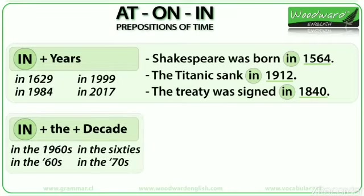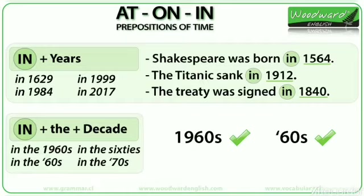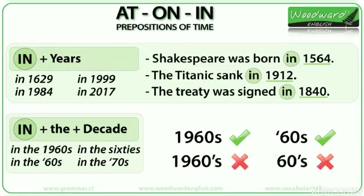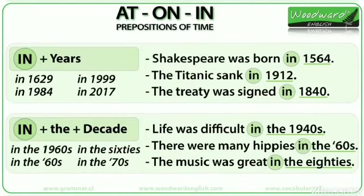The preposition in is also used with decades. A decade is a period of 10 years. We say in the 1960s, in the 60s. Notice how an apostrophe is used at the beginning to replace the 19 part. You can also write the decade as a word: in the 60s, in the 70s. Notice we use the article the before the decade, and no apostrophe between the number and the final S. Examples: Life was difficult in the 1940s. There were many hippies in the 60s. The music was great in the 80s.